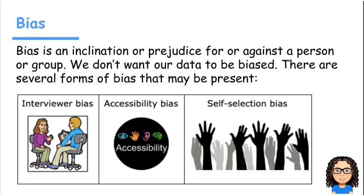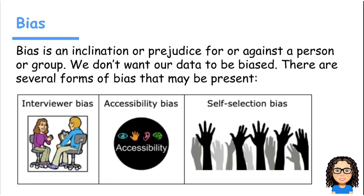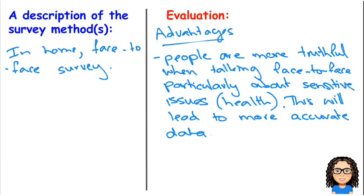Let's have a look at some of the other possible things to consider. We need to think about response rate. With face-to-face, it's always harder to say no to somebody face-to-face than it is to say no to somebody by email — or if you get a questionnaire in the mail, you can just throw it out, it's much easier to ignore. So for face-to-face, that's an advantage: the response rate will be higher.